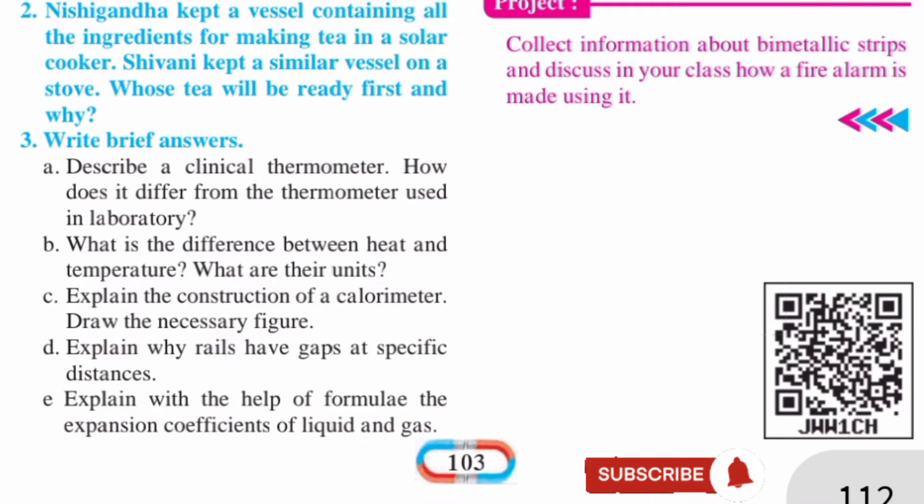Question No. 2: Nishigandha kept a vessel containing all the ingredients for making tea in a solar cooker. Shivani kept a similar vessel on a stove. Whose tea will be ready first and why?